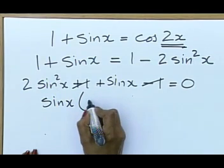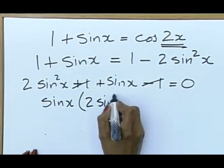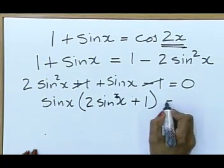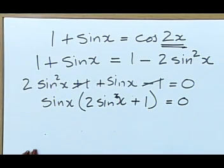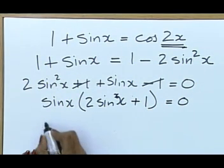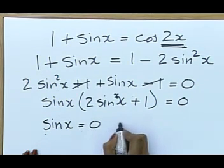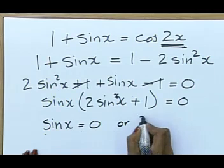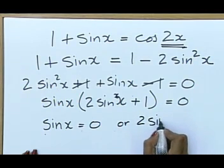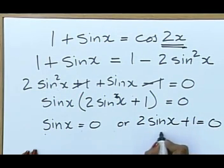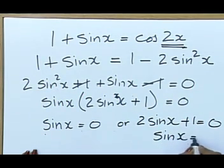And I'm left with 2 sin x plus 1 equals 0. The rest we know. Sin x is equal to 0, or 2 sin x plus 1 equals 0, and sin x in this case becomes minus 1 half. All we need to do is find the angle.